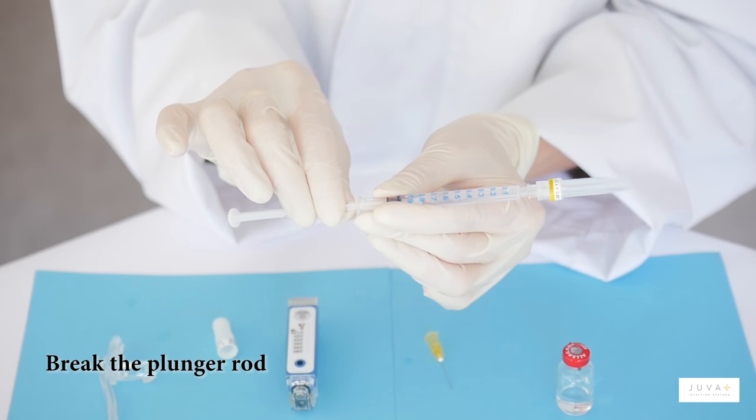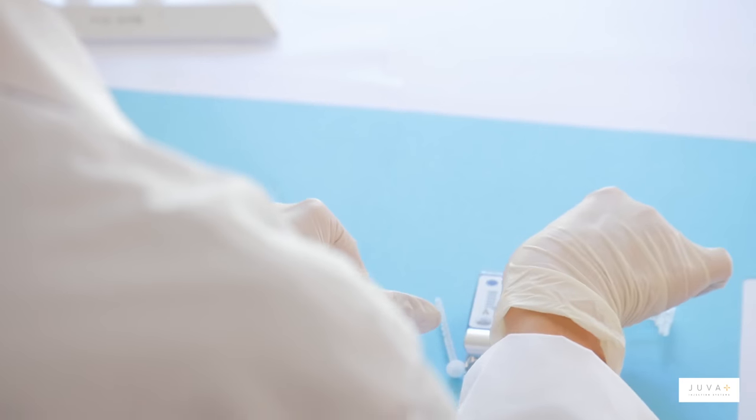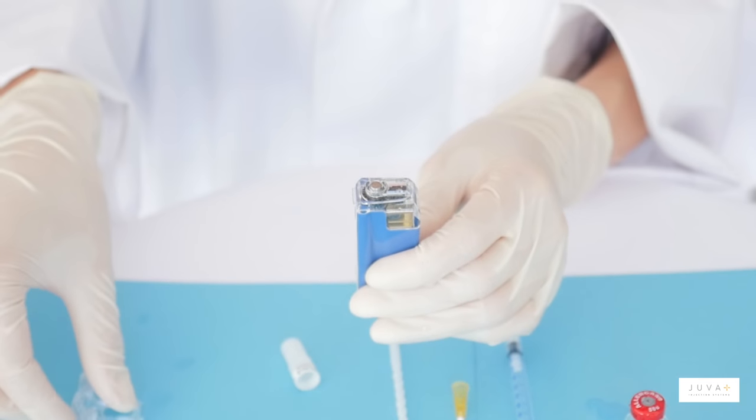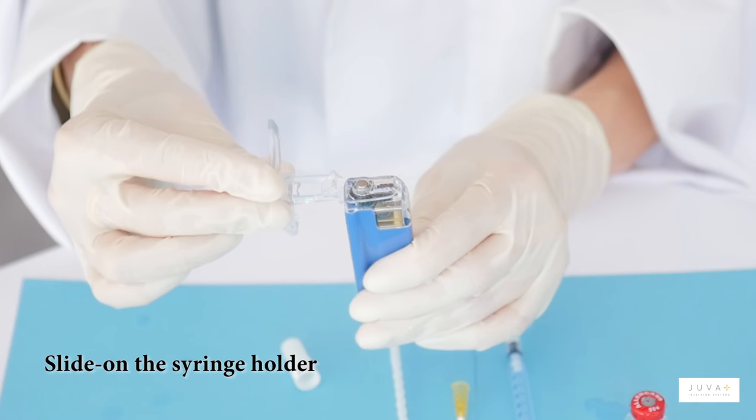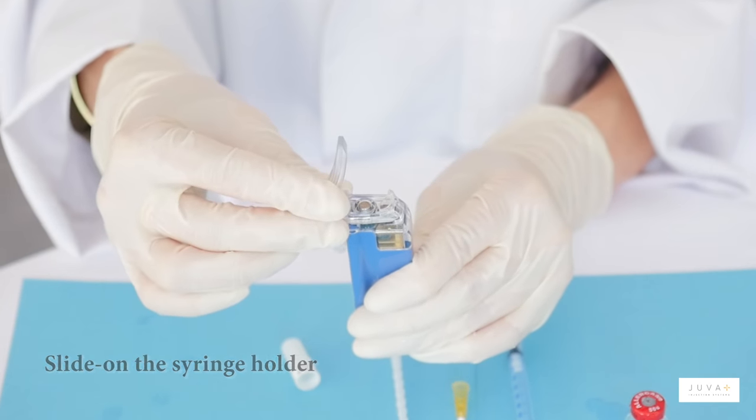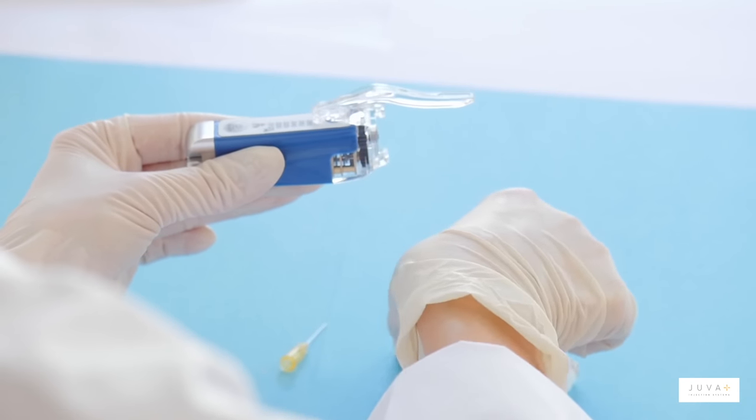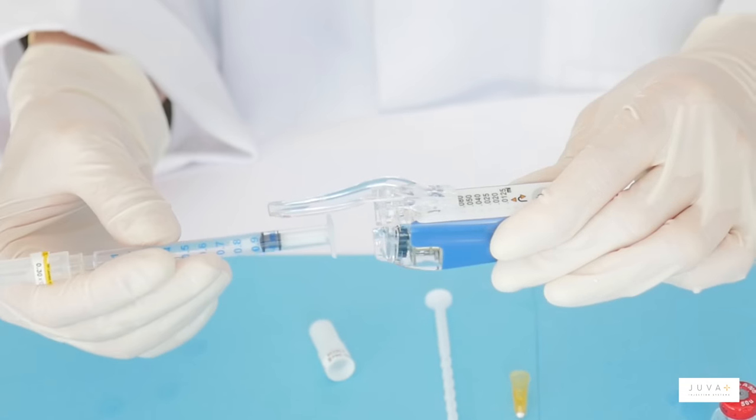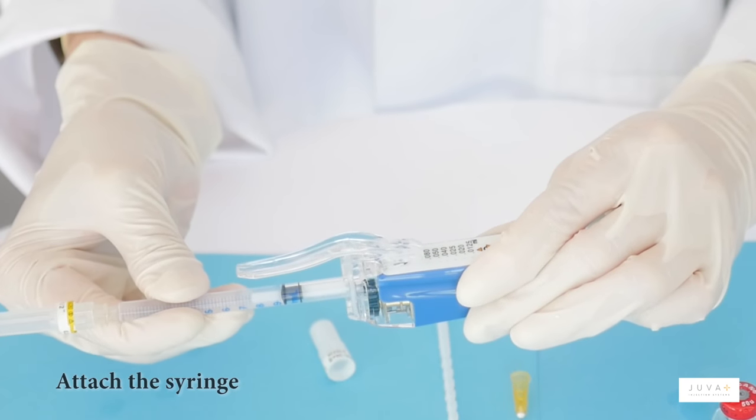The plunger of the syringe is broken off. I slide the syringe holder onto the device, and then the syringe is securely attached onto the Jula Pen.